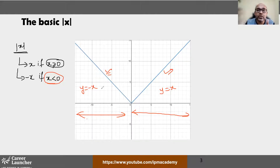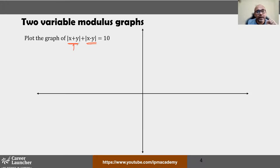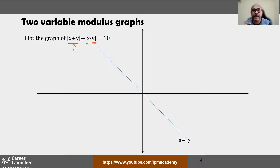This understanding of drawing the basic graph is important because we're going to continue with the same logic in a slightly more complex scenario. Now let's look at what happens when there are two variables — x plus y and x minus y, the standard format. You draw boundary lines. The first line: equate x plus y equal to zero, which gives you x equal to minus y. Similarly the second boundary line gives you x equal to y.